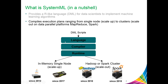The language component parses the DML script into a hierarchy of statement blocks and statements. It also performs syntactic analysis, live variable analysis, and semantic validation. We then construct a directed acyclic graph of high-level operators, called HOPs, per statement block. The SystemML optimizer performs various optimizations on these HOP DAGs, for example, algebraic simplification rewrites, intra- and inter-procedural analysis, and matrix multiplication chain optimization.